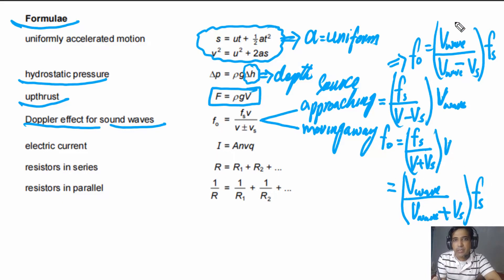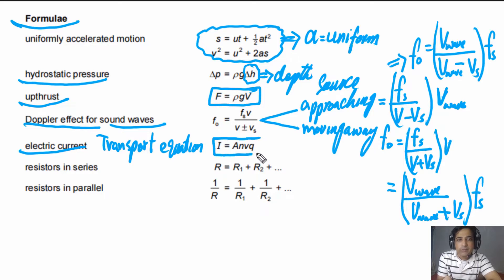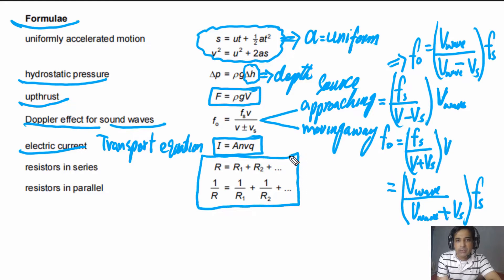The next formula is about electric current, also called the transport equation — a very important formula you need to understand. After that, there are formulae for resistors in series and resistors in parallel. These are basic formulae you will need for calculations in your exam. If you are not clear about any formula, you can come to this page and check.